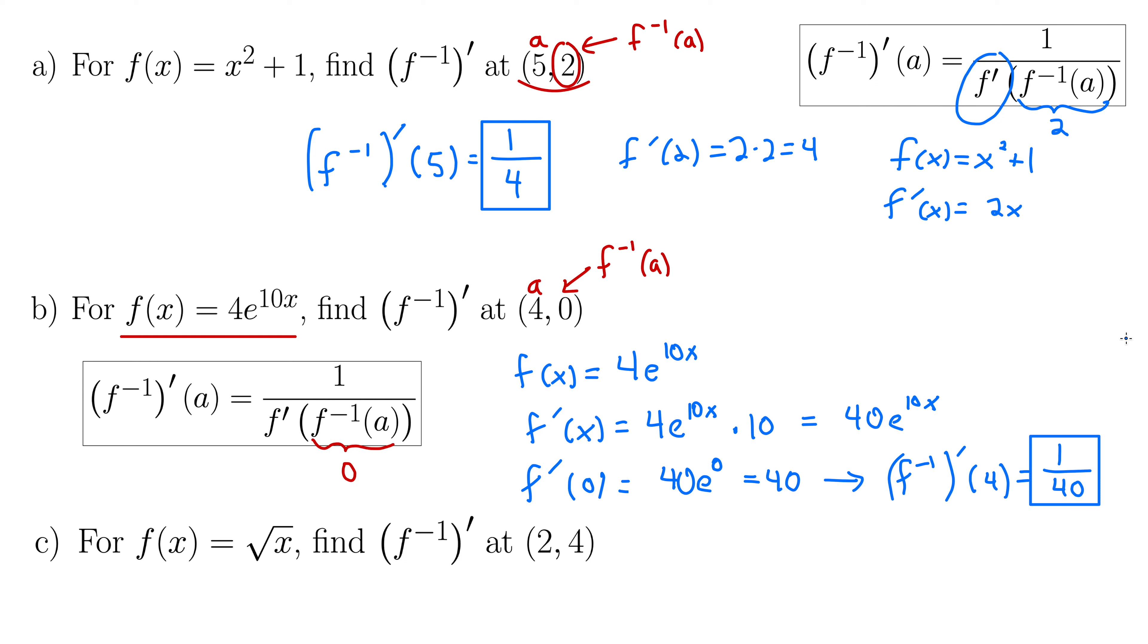So f⁻¹'(a) is 1 over 40. Now we're going to compute the inverse function at a point. Note that we're never actually computing the inverse function. We could with these. We know how to do that. You switch the x and y, solve for y, all that stuff. But it's kind of cool that we don't actually have to do that here. That's the good news. The bad news is that this is only good for one point at a time. So it's not a very general theorem, but it does allow us to get at the derivative of the inverse function at a point without having to compute the whole inverse function.